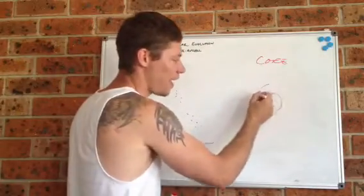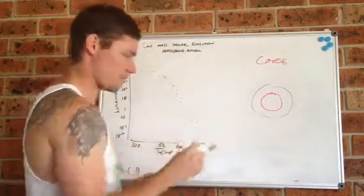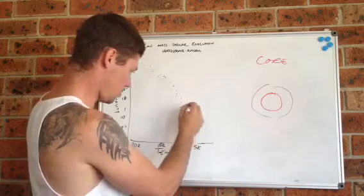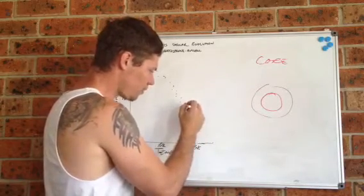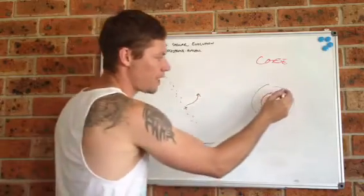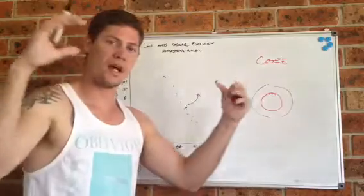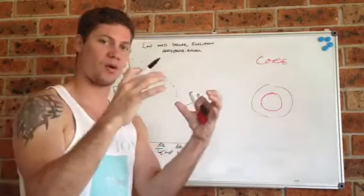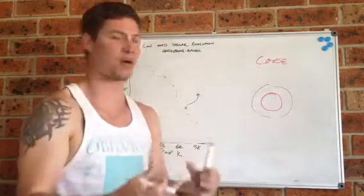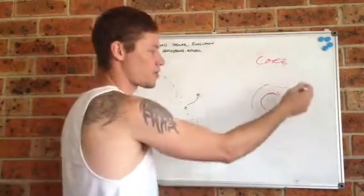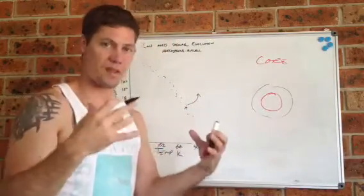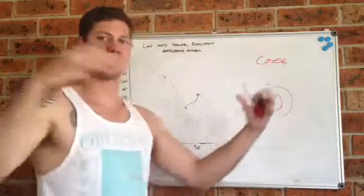When that core starts to collapse, two very interesting things happen. One, the actual star itself will cool and expand. What's happening is as that core collapses, the hydrogen that was outside of that core will start coming into an environment that's hot enough and has enough pressure to start a fusion process. So that excessive fusion is going to increase the pressure within the star and that's going to expand it greatly.